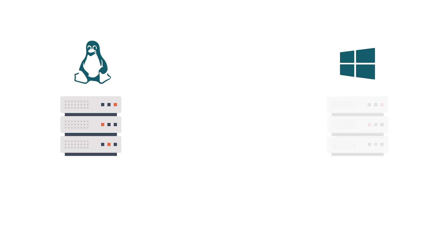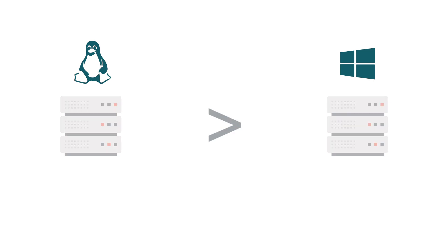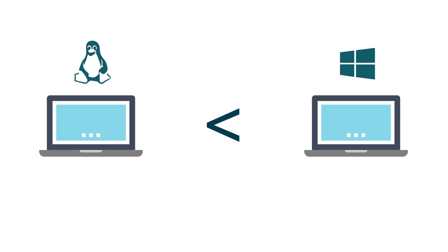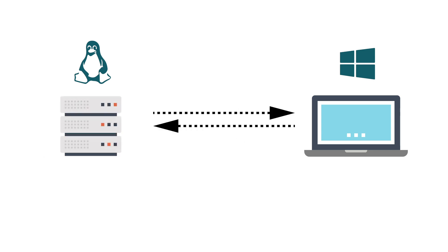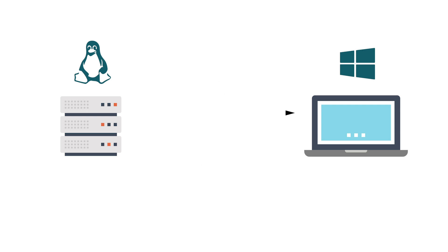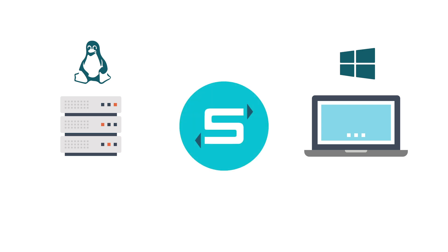Linux was overtaking Windows servers in many organizations, yet the Windows operating system, which was still ubiquitous, needed a way to communicate and gain access to these files. Thus the Samba protocol, which was a variant of the SMB protocol, was born.